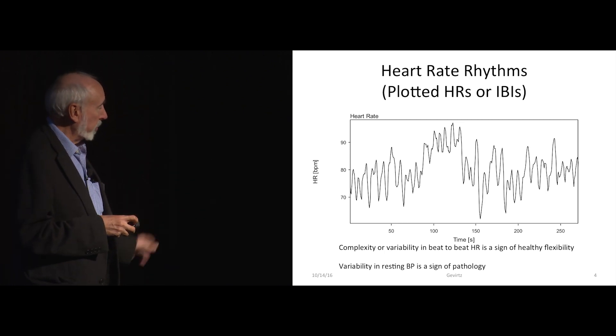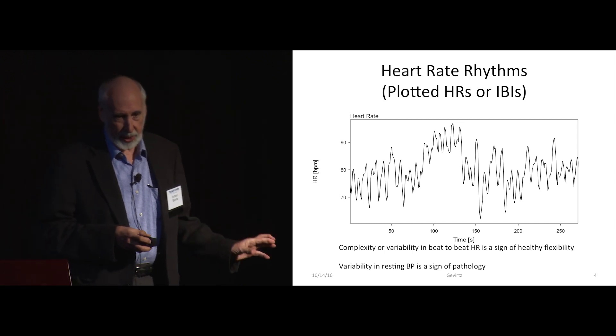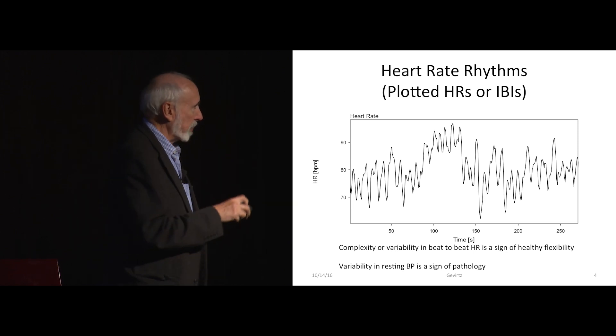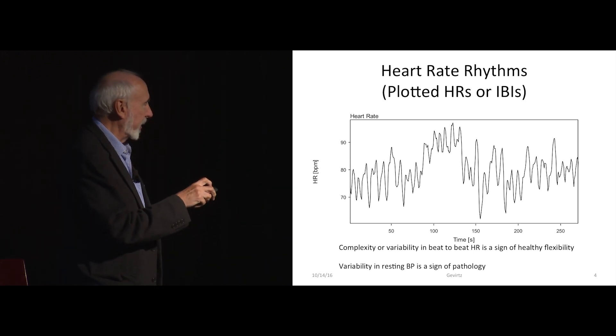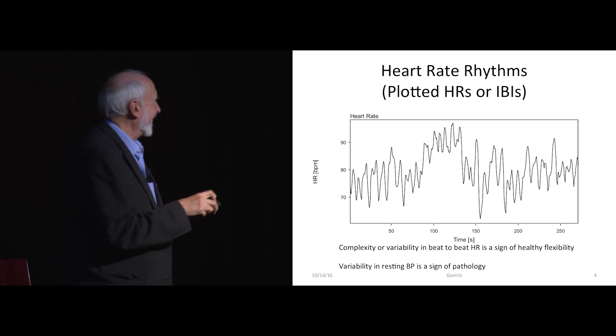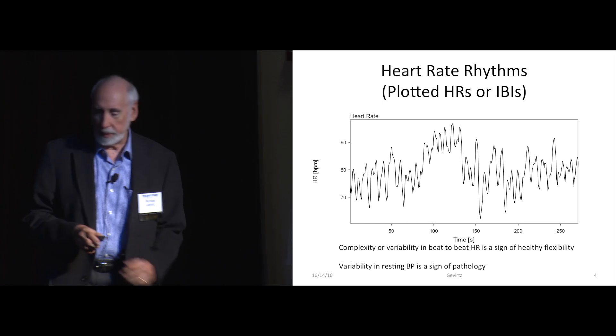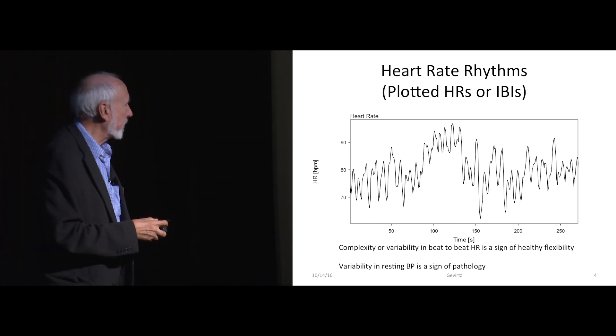So I think most of us in the room know that we don't want heart rates to look like that, but really good-looking heart rates look really messy. They should be quite complex. They should drift all over the place. And the complexity of the heart rate indicates the flexibility of the autonomic nervous system to adjust to both internal and external milieu. By the way, it's important to note that blood pressure, this isn't true for blood pressure. Blood pressure is supposed to be steady. Variable blood pressures are bad.